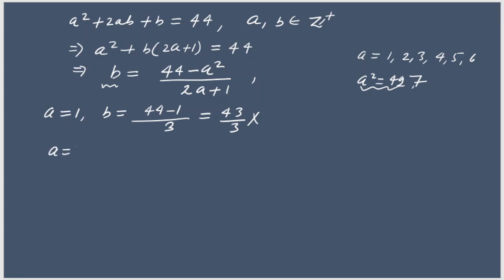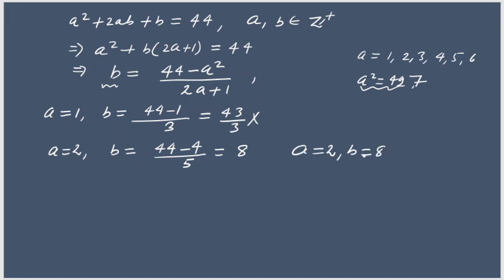If a = 2: b = (44 − 4) / (2×2 + 1) = 40/5 = 8. So we get the solution a = 2 and b = 8.